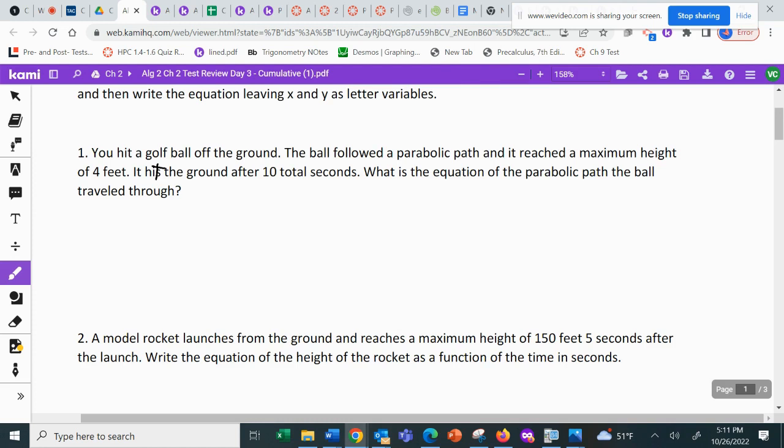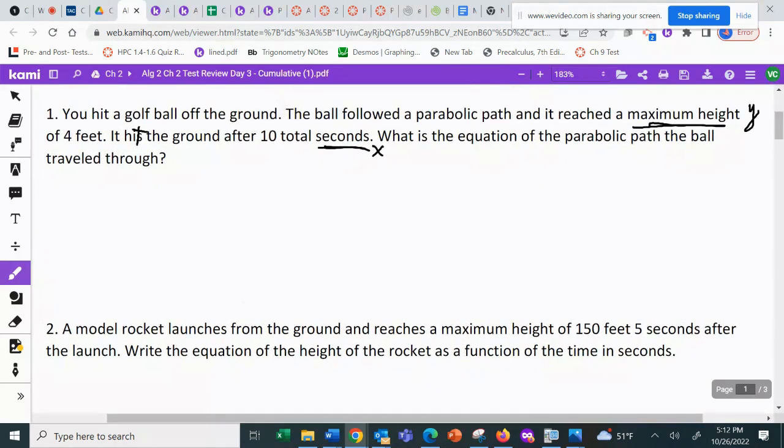What is the equation of the parabolic path the ball traveled through? So as we're reading this, it looks like height is important and time, seconds, is going to be important. So as time passes, it's going to determine what height the ball is. So the input would be X, the output would be Y, and I've labeled the variables. Now, I'm going to zoom in enough so I can read it. This ball is going to start on the ground at time zero.